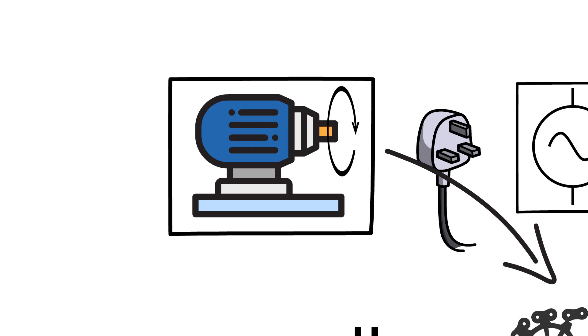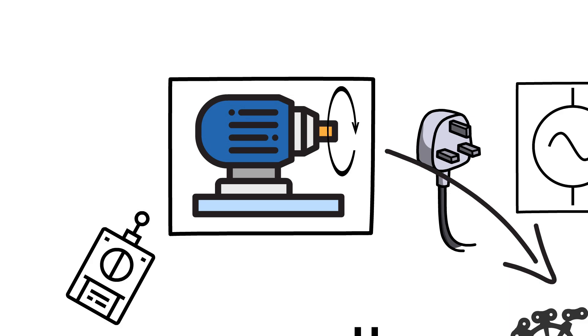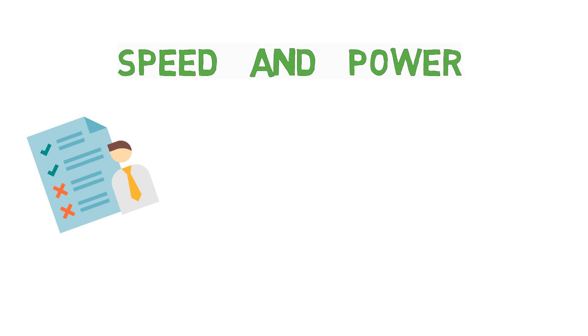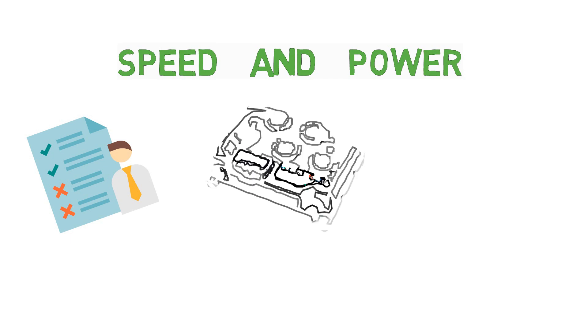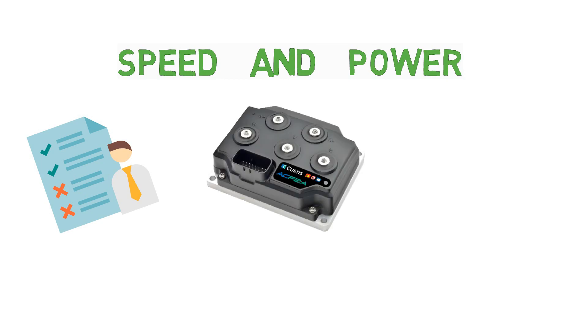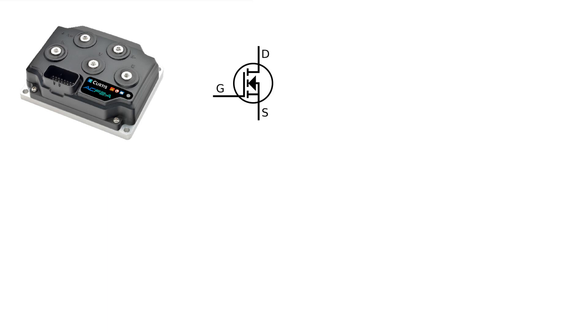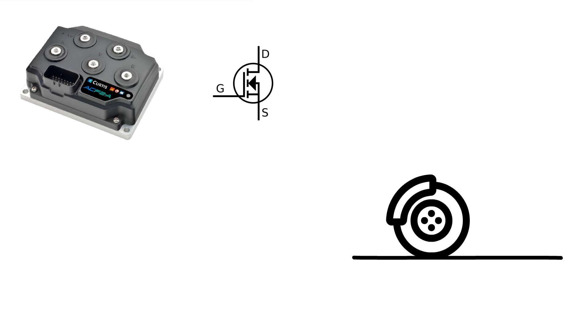Just driving a motor is not sufficient — control is also important. Simply giving power supply is not what we want; rather, we should be able to control the speed and power of the motor and change them according to our requirements. To control these things, a motor driver or motor controller is used, where different power electronics topologies are employed to achieve this.